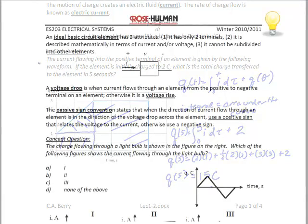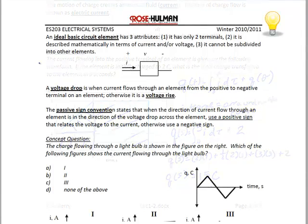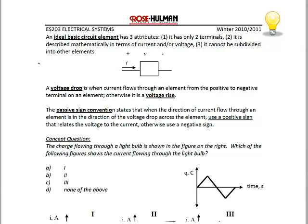Now let's go over some basic definitions. An ideal basic circuit element has three attributes: it only has two terminals, it is described mathematically in terms of current and/or voltage, and it cannot be subdivided into other elements. We've already discussed some of these elements including voltage sources, current sources, resistors, capacitors, and inductors.